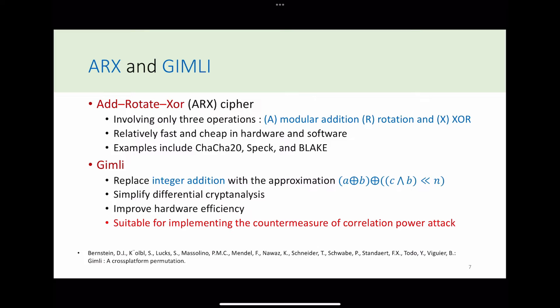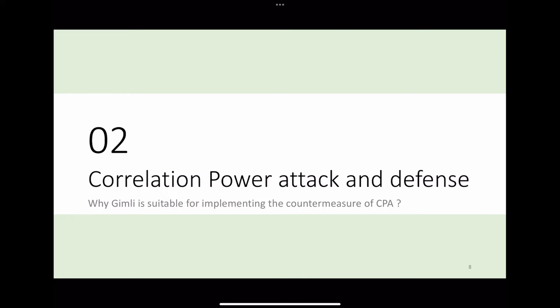Ciphers using three operations - modular addition, rotation, and XOR - are usually called ARX ciphers. Since they are relatively fast and cheap, ARX ciphers have become more popular. To simplify differential cryptanalysis and improve hardware efficiency, Gimli replaced the addition with bitwise operations. Because of these bitwise operations, Gimli is very suitable for implementing the countermeasure of correlation power attack. I am going to introduce the correlation power attack and discuss why Gimli is suitable for implementing the countermeasure of CPA.